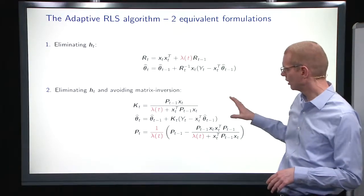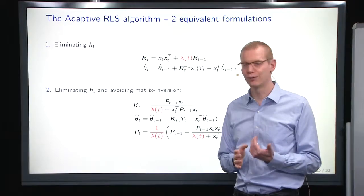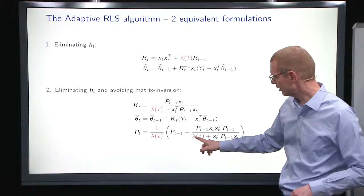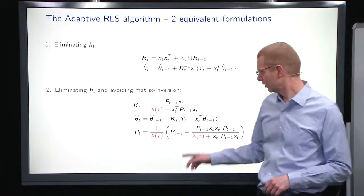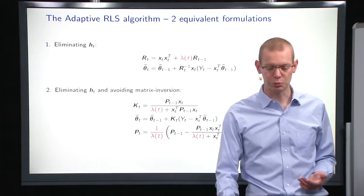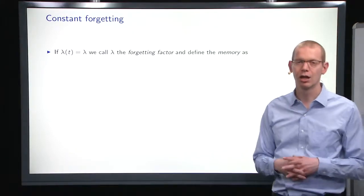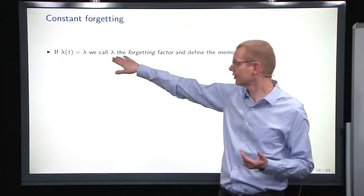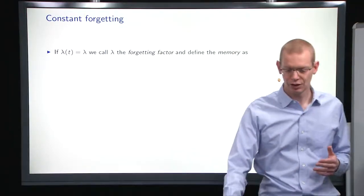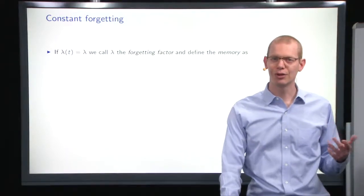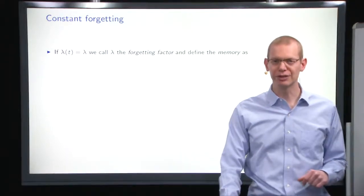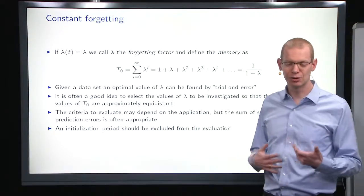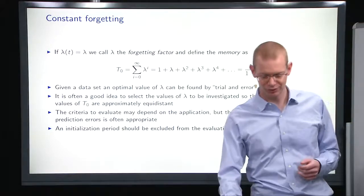And likewise, we can eliminate the matrix inversion if that is an interest that we have. In a particular case, it's basically just some ones here that becomes lambdas instead. So the easier thing is to have constant forgetting. So lambda is just a fixed number. And if you recall, what is then the memory? What is the effective number of observations in that case? It's one divided by one minus lambda as we looked at many a long time ago.